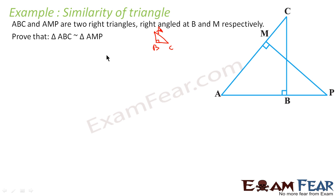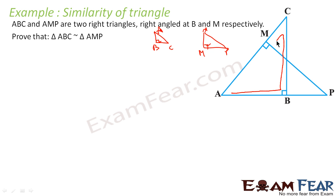To prove they are similar, we draw a similar triangle AMP — this is also a right triangle since M is the right angle. Now to prove they are similar, first we identify that these two angles are the same. In triangle ABC and triangle AMP, angle A is common, so angle A is equal to angle A.